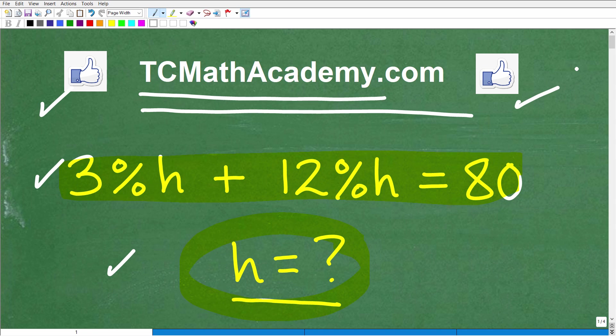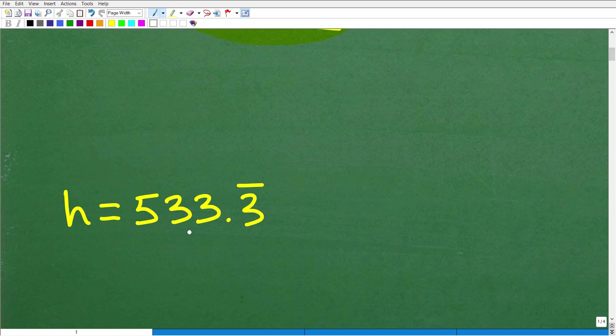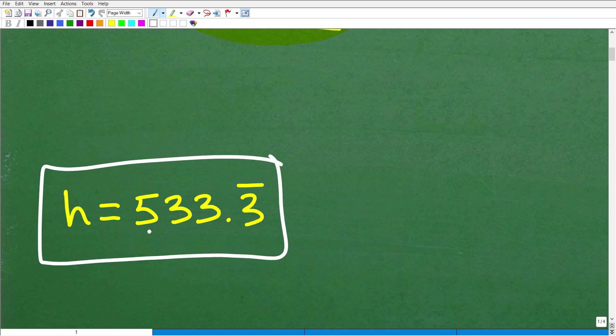Okay, so let's go ahead and see the solution. We want to solve for h, and the answer is h is equal to 533.3 repeating. So this notation here, that bar over the 3, just simply means that this decimal goes on infinitely, just a bunch of 3s to infinity.